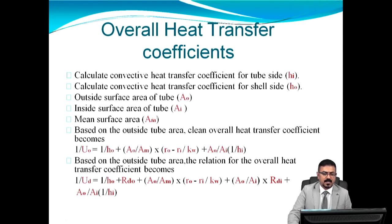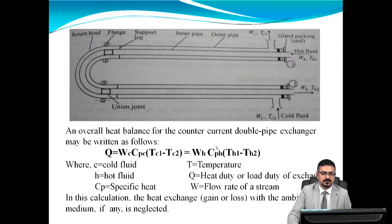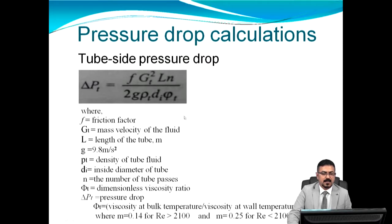The overall heat transfer coefficient U is given by: 1/U equals 1/h_i times (A_o/A_i) plus the wall resistance term with the log of the outer to inner radius ratio, plus 1/h_o times (A_o/A_i). Pressure drop calculations are also performed using the relevant equations for shell-side and tube-side flows.